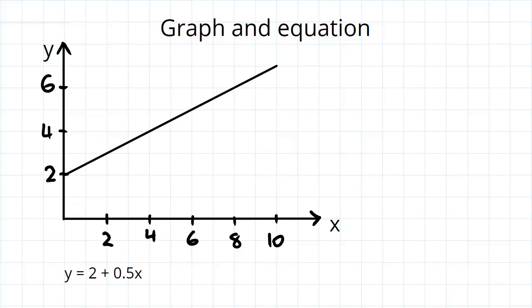Now what the graph tells you is that for any given point on the graph we have an x value, which we can see down here, in this case it's 6, and we also have a y value which in this case is 5.